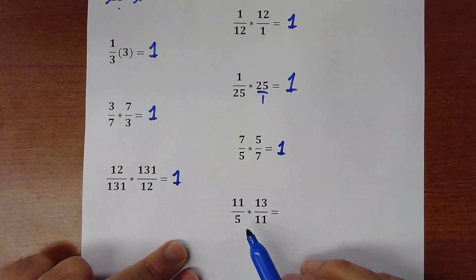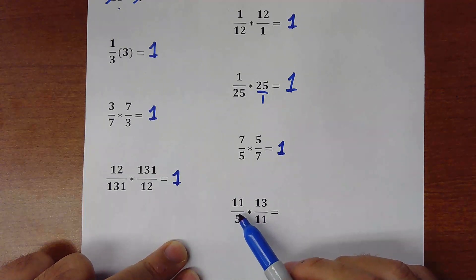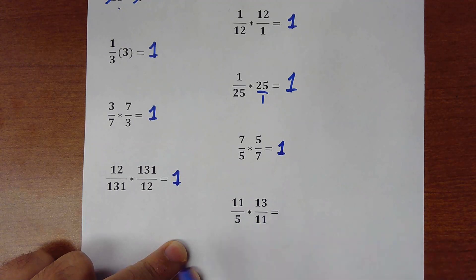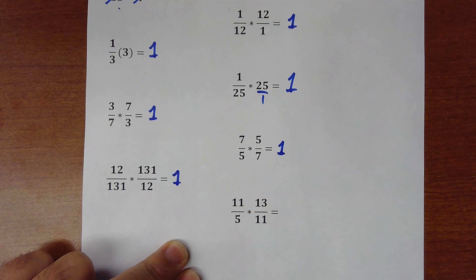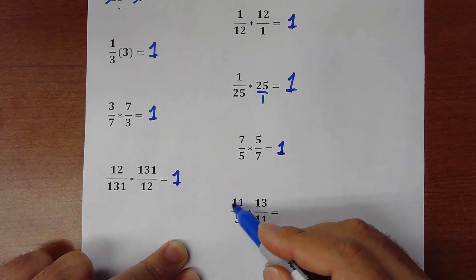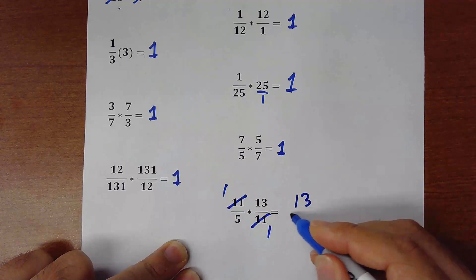And in this case the answer is not 1 because we are not flipping the same fractions. Notice that when you flip 11 over 5 it should be 5 over 11, and we have 13 over 11. So we simplify the 11 with the 11. That's 1 and 1. And the answer would be 13 over 5.